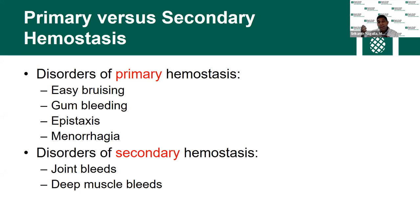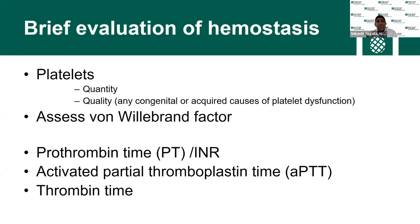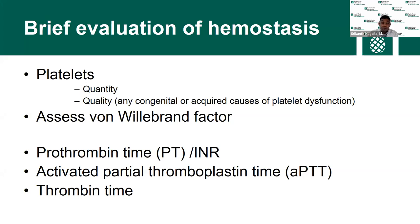Brain bleeds can occur in either primary or secondary hemostasis defects, so they count under both. To evaluate hemostasis, you assess primary hemostasis first, then secondary. For platelets, assess both quantity — does the patient have low platelets, possibly ITP? — and quality, such as acquired platelet dysfunction due to aspirin, clopidogrel, or uremia in end-stage kidney disease, or congenital platelet defects like Bernard-Soulier syndrome or Glanzmann's thrombasthenia. Then assess von Willebrand factor using ristocetin activity, antigen, and factor VIII level. For secondary hemostasis, look at PT and INR, APTT, and thrombin time, which evaluates fibrinogen conversion to fibrin.